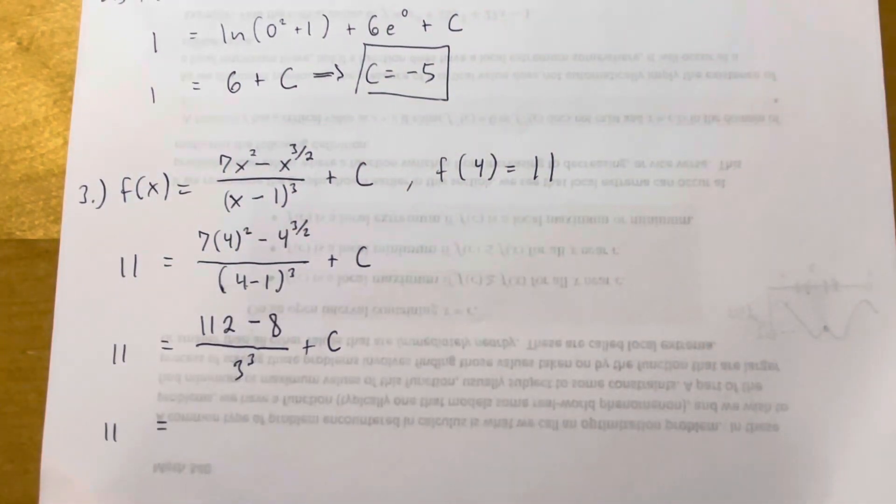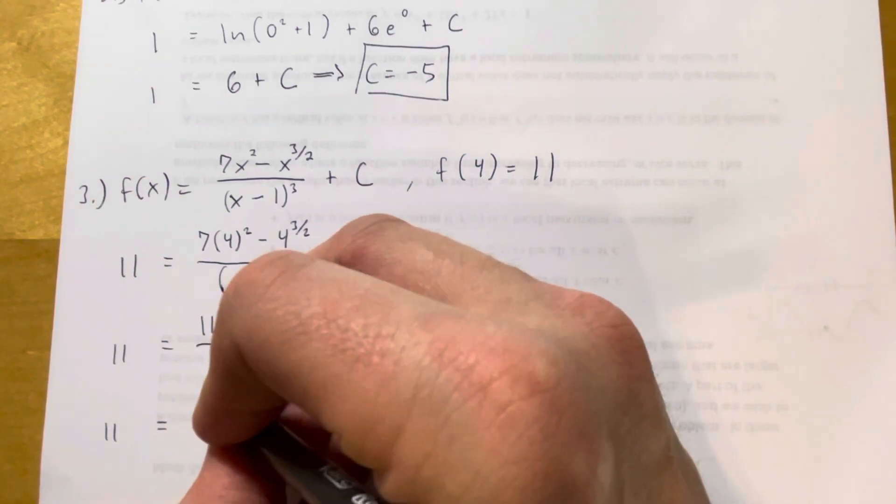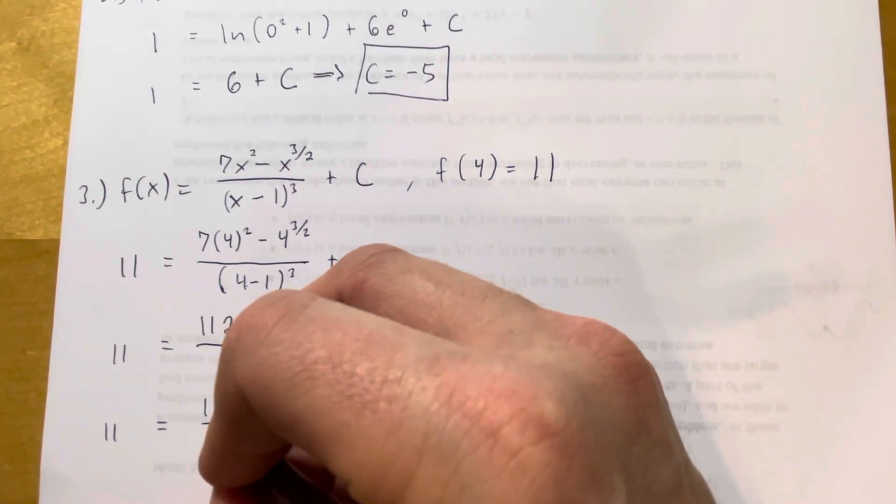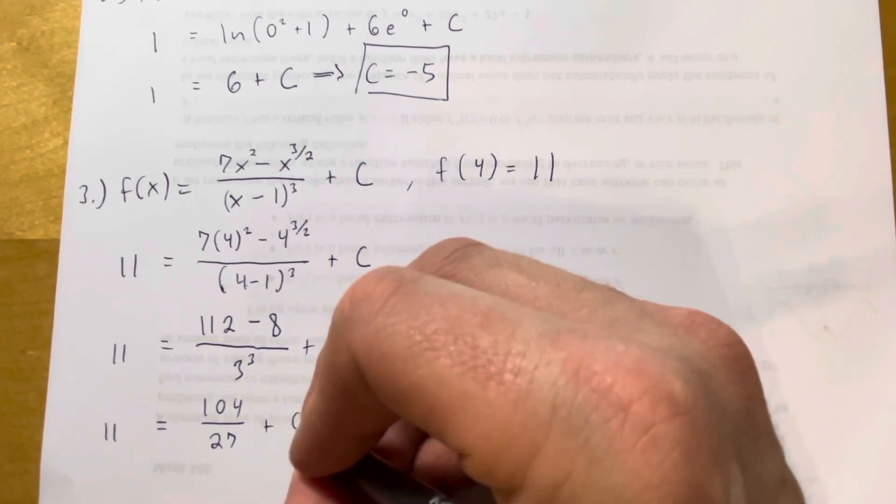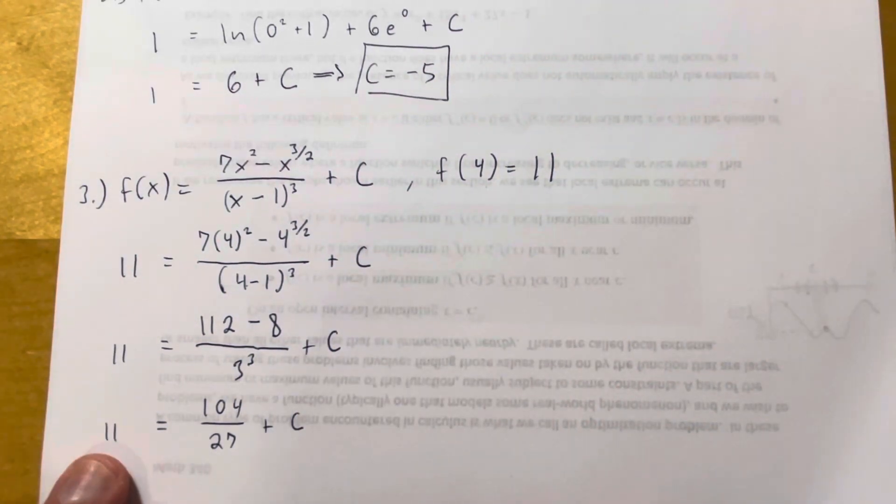11 is equal to, on this side, 112 minus 8 is 104. 3 cubed is 27 plus C. Now, I want to get a common denominator here.